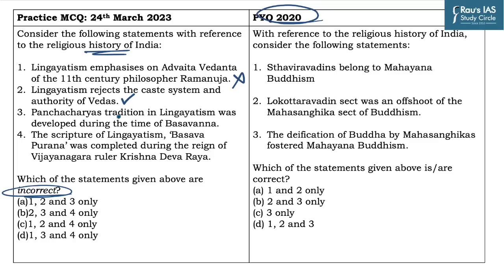The third statement says the Panchacharya tradition in Lingayatism was developed during the time of Basavanna — it is an incorrect statement because this tradition was developed after the time of Basavanna. The fourth statement says the scripture of Lingayatism, Basavapurana, was completed during the reign of Vijayanagar ruler Krishnadevaraya — this is also incorrect because the Basavapurana was completed in 1369 during the time of Bukka Raya I. The answer to this question becomes D, which is 1, 3, and 4 only.